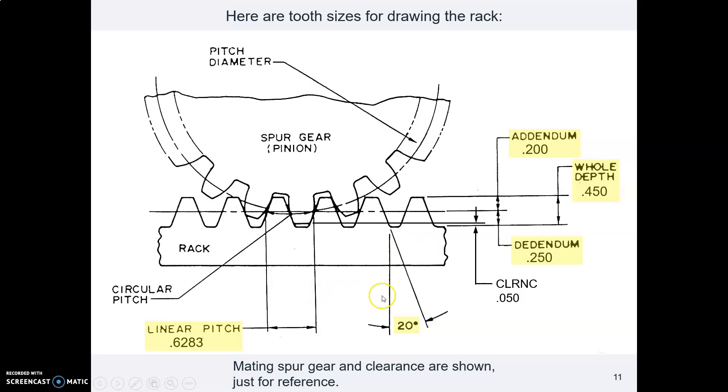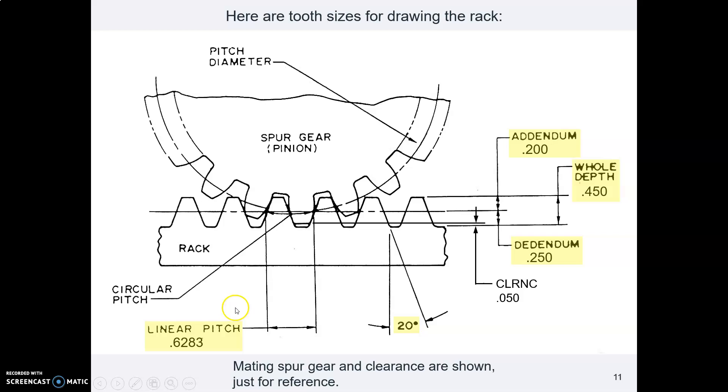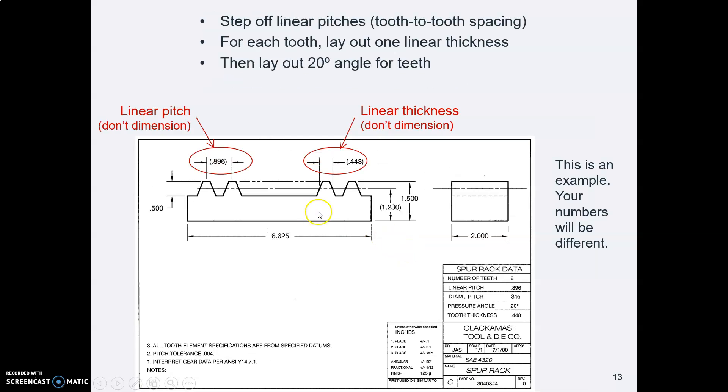What is the linear thickness for your tooth? So I think that's shown in our assignment sheet. Here's the linear pitch, 6283. The width, where did we put that? The tooth thickness is 0.3142. So the pitch is 6283, that's the space from tooth to tooth. And the tooth thickness at the pitch line is 3142. So that's what you will step off here.